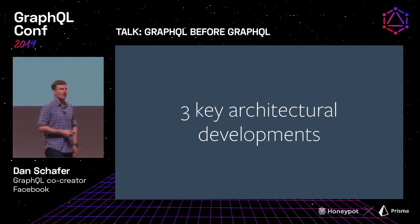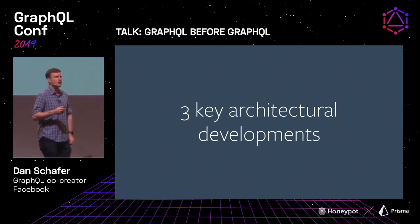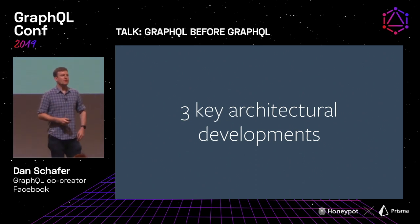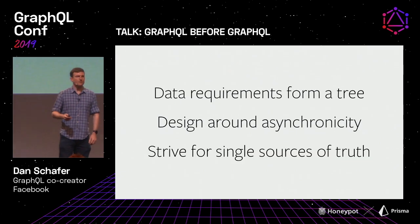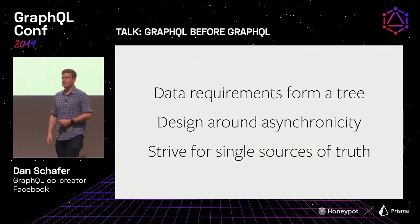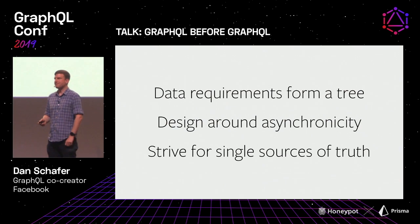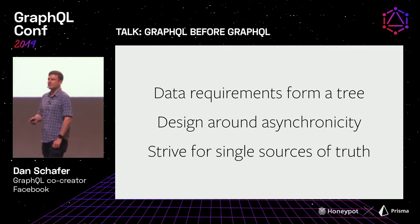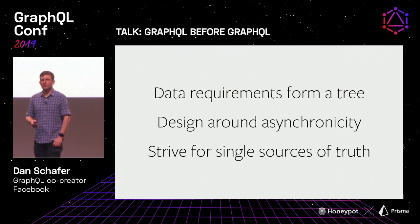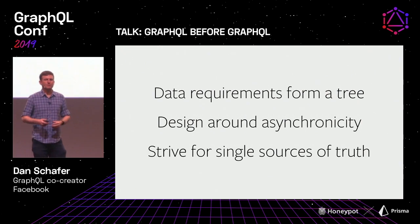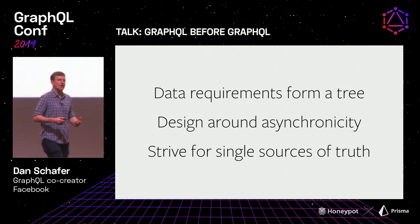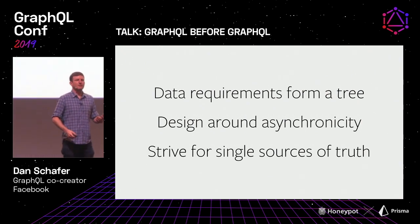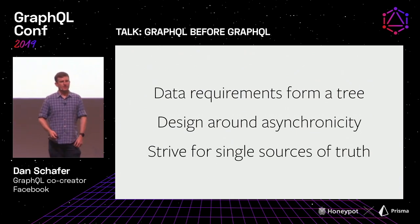When I think about this era at Facebook, I really think of three key architectural developments — three key principles that both informed how we built things and that we emerged with from building things. Those are: the idea that data requirements form a tree, the idea that you need to design around asynchronicity, and our desire to strive for single sources of truth.